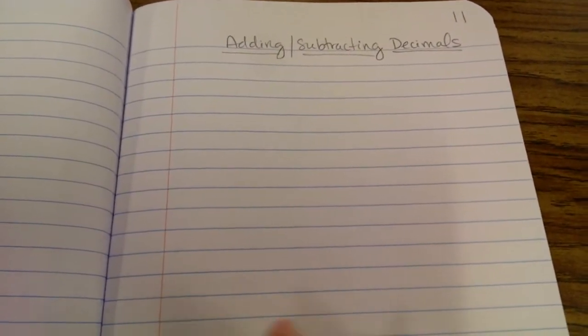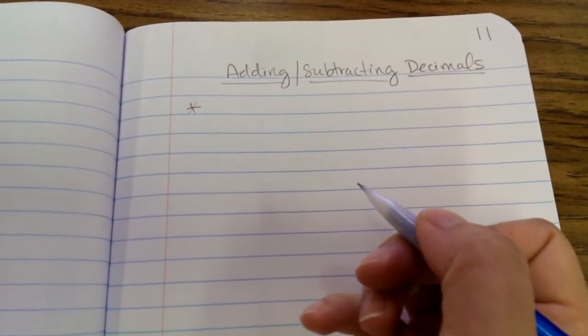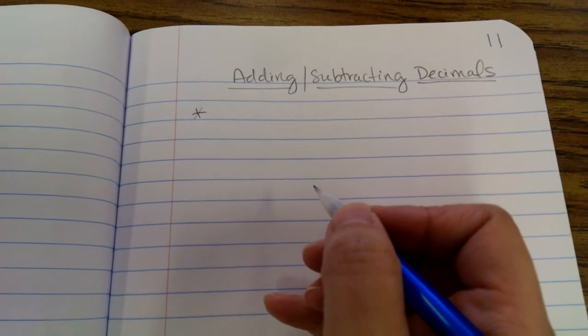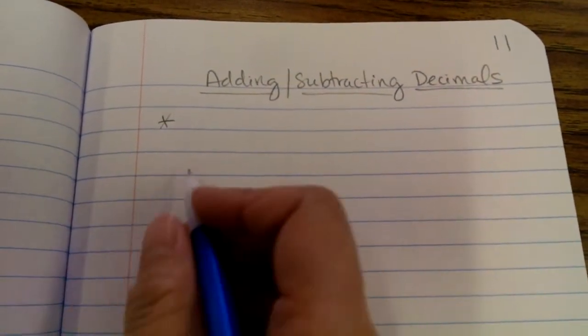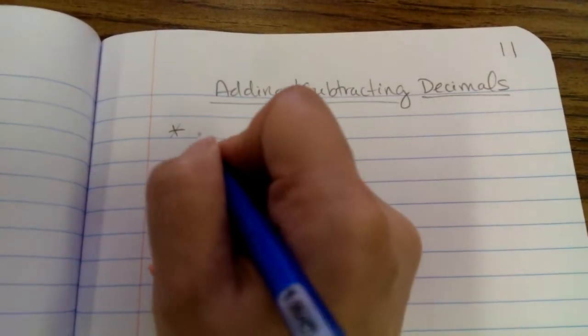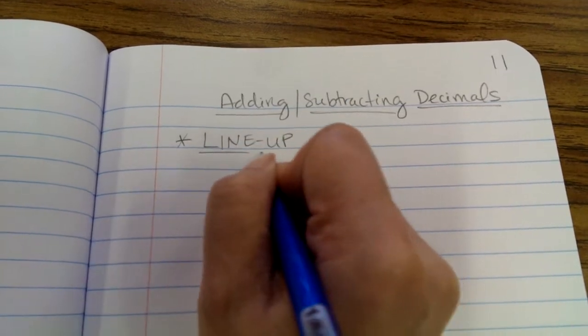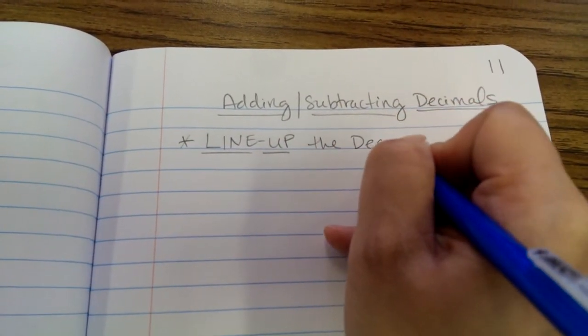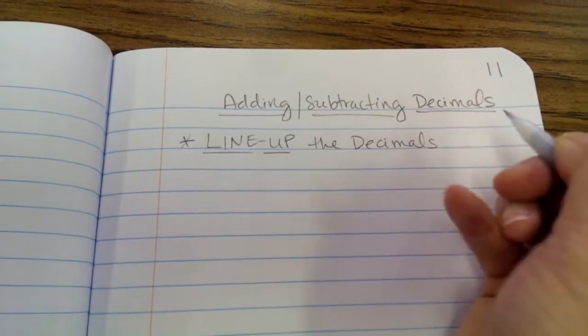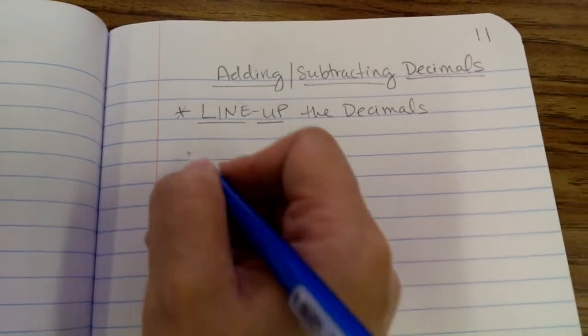So there's really one main rule for adding and subtracting decimals, and that rule is that you must line up the decimals before you add or subtract. So that is the first thing we always do, and that is to line up the decimals. So I'm going to put line up in capital letters. We have to line up the decimals. Let's do some examples. Let's start with adding.